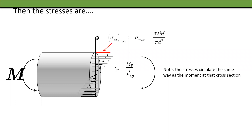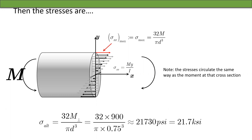The key to finding stresses after computing moments is that stresses circulate the same way as the moment at that cross section. The maximum bending stress is sigma = 32M / (π d³) — that's from My/I. In our case, the alternating stress is 32 times 900 over π times 0.75 cubed, which equals 21,730 psi — that's 21.7 ksi. This stress alternates because the whole shaft is rotating. That completes the nominal stress computation.